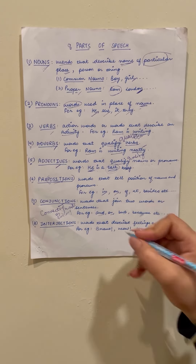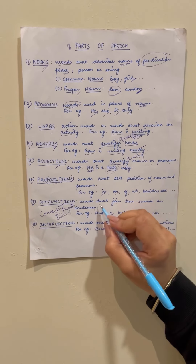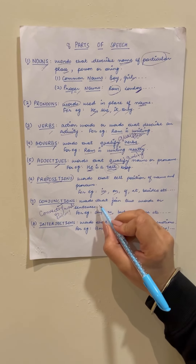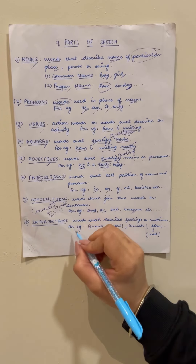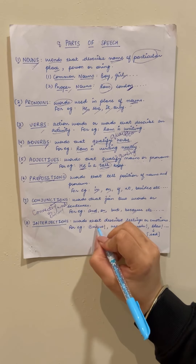Our grammar topic for today is parts of speech. So there are eight parts of speech: nouns, pronouns, verbs, adverbs, adjectives, prepositions, conjunctions, and interjections. So nouns क्या होते हैं, pronouns क्या होते हैं और पूरे parts of speech क्या होते हैं, अब हम वो discuss करने जा रहे हैं.